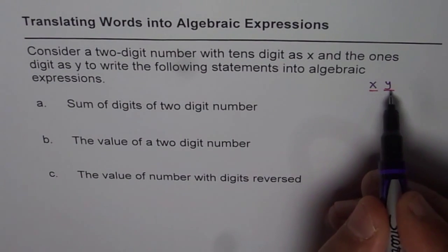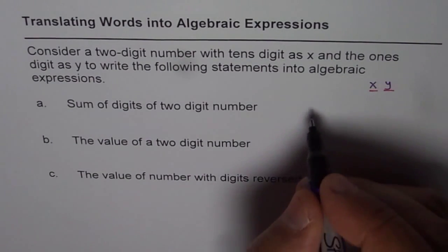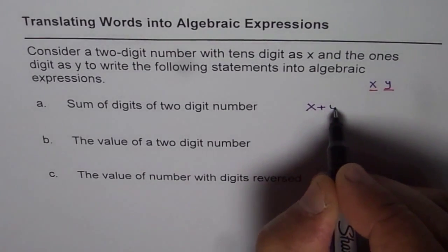We need to write sum of digits of two-digit number. If x is in tens place and y is in ones place, then their sum is x plus y. That is what we can write.